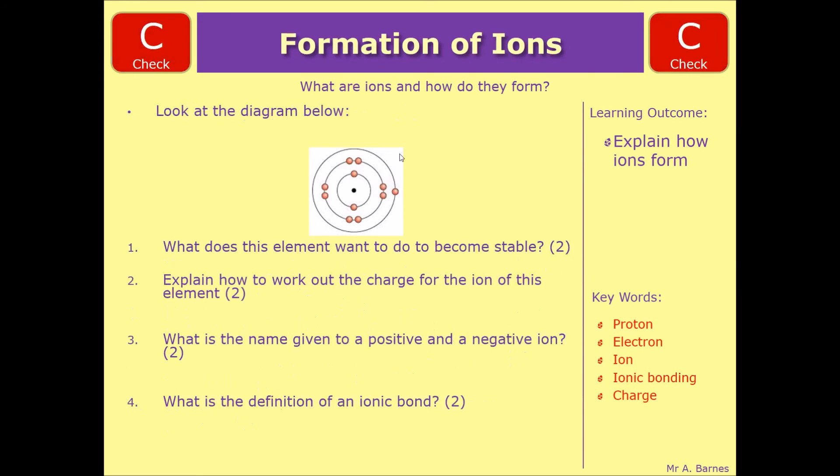Let's have a look. So what does the element want to do? Well, we've said it's got one electron in the outer shell. So to get a full outer shell, it's going to be easier to lose that one electron. So you get one mark for lose, one mark for one electron.